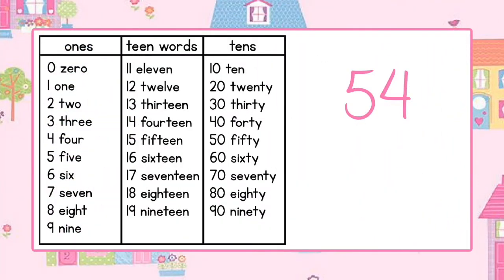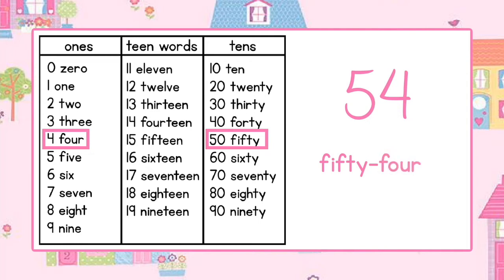Let's get started. This is the number 54. Using the chart we first look for the word fifty. Once we find it, we may write the word fifty. Next we use the chart to find the word four. Now that we found it we may write the word four. This is the word fifty-four.